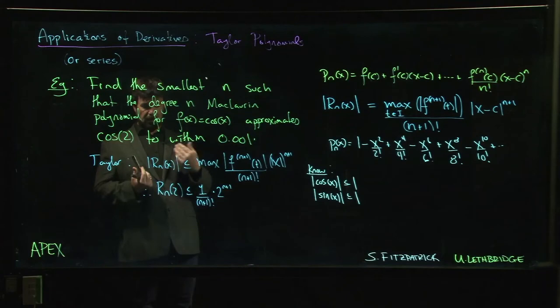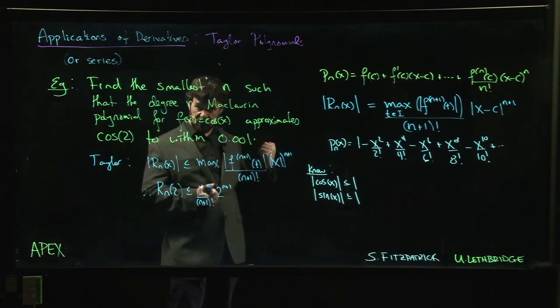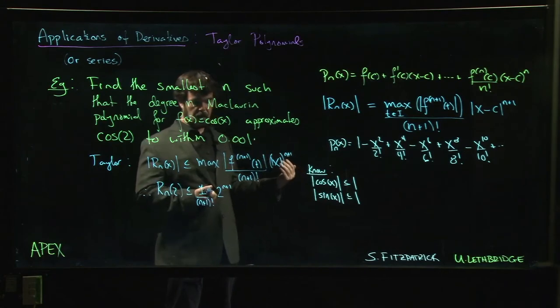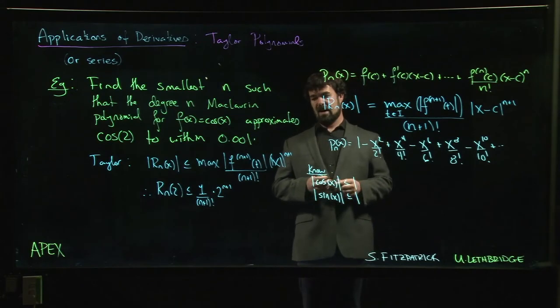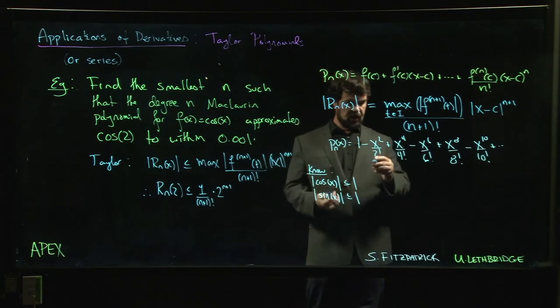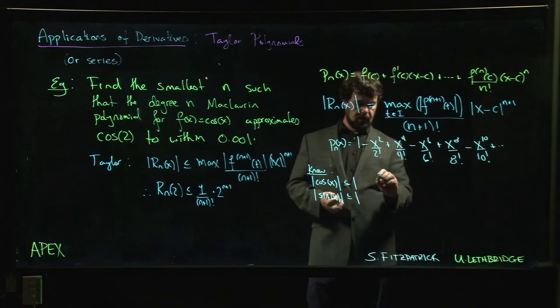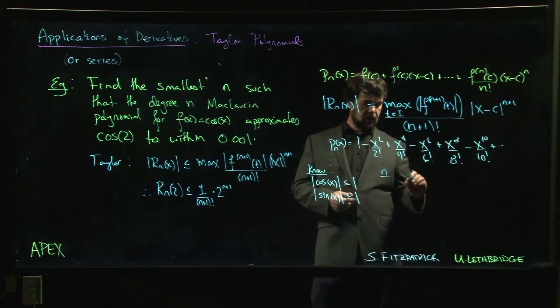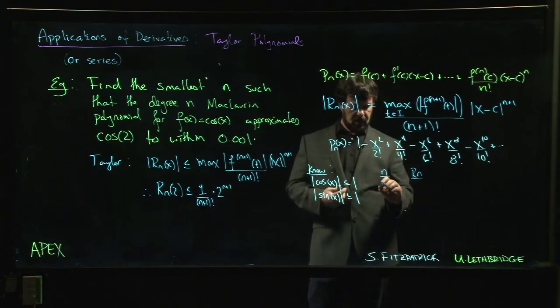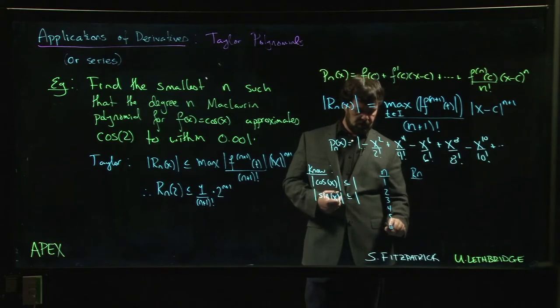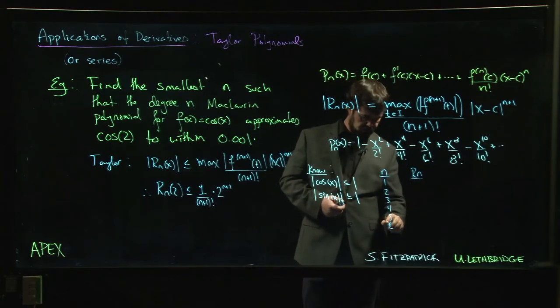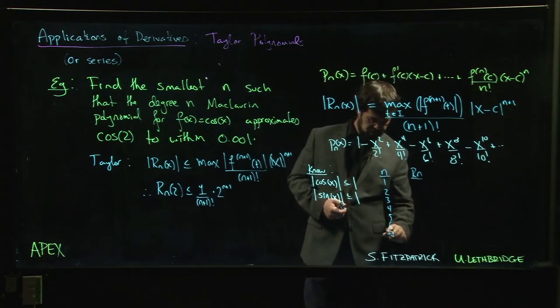So that means that regardless of the interval that we're working on, this maximum can't be bigger than 1. So the remainder, if we're doing this at 2, has to be less than or equal to 1 over N plus 1 factorial times 2 to the N plus 1. And now the rest is kind of trial and error computational work, plugging in values of N until you find the first N that gives you a small enough value. We wanted to be less than 0.001. This is where a spreadsheet is really great.